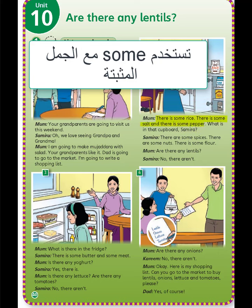أما some فتستخدم مع الجمل المثبتة، مثل: there is some rice، there is some salt، there is some pepper — كلها أسماء غير معدودة. وتأتي مع الأسماء المعدودة أيضاً: there are some spices، there are some nuts.